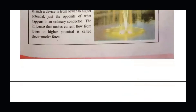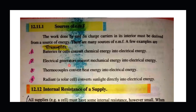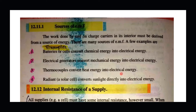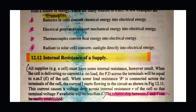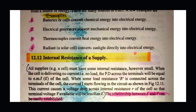Now we will see the sources of electromotive force. For example, we have dry batteries or dry cells — they convert chemical energy into electrical energy. Then we have generators which convert mechanical energy into electrical energy. In dams, water from a reservoir flows down to turbines connected to electrical generators, converting mechanical energy to electrical. Similarly, thermocouple sensors generate temperature-sensitive voltage, converting heat energy into electrical energy. Radiant sources like solar cells convert sunlight directly into electrical energy. These are different examples used as electromotive forces.